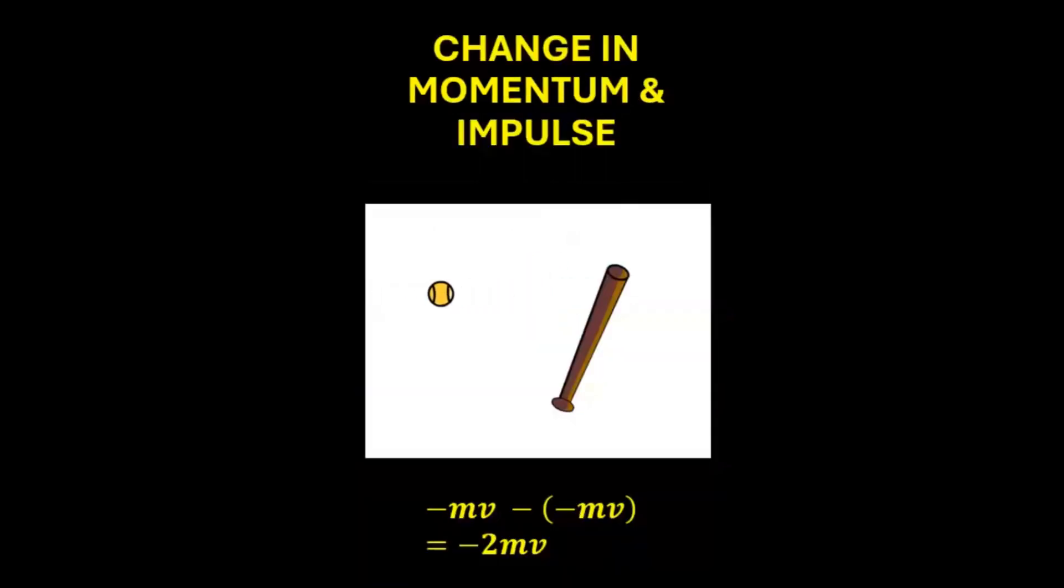Look at this example. When the ball is hit by the bat, the final momentum is along the negative direction while the initial momentum is along the positive direction. So change in momentum is minus 2L and not zero.